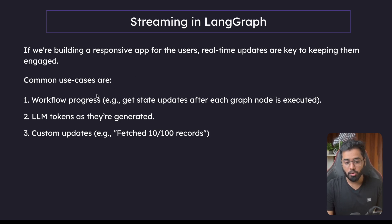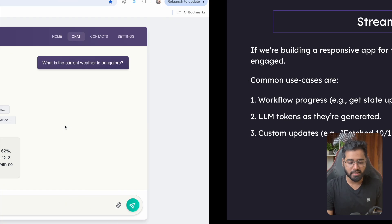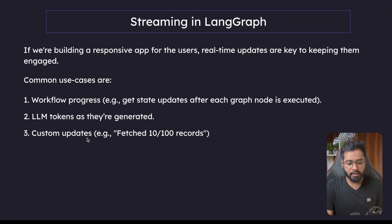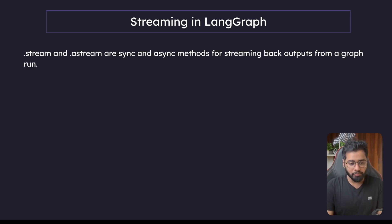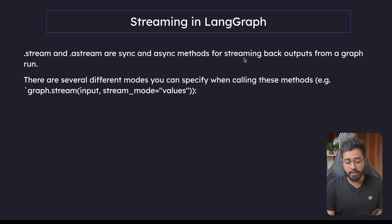Common use cases are workflow progress — we need to get state updates after each graph node is executed — LLM tokens as they're being generated, and custom updates. When we talk about streaming in LangGraph, we have the stream and astream methods. These are sync and async methods for streaming back outputs from a graph run. There are several modes you can specify when calling these methods.